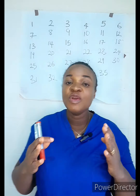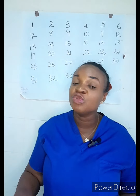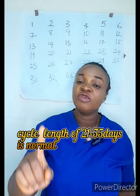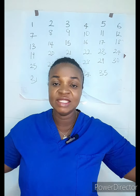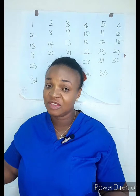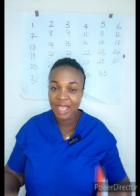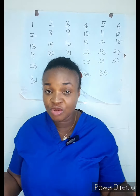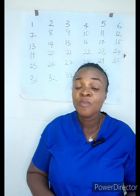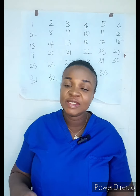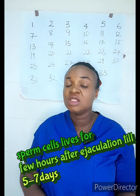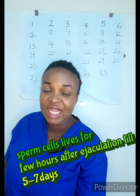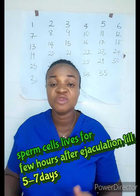For every woman, your cycle length — if said to be normal — falls between 21 to 35 days. The cycle length is calculated from the day of the beginning of your first menses to the next menses. It may not be regular; this month maybe 21, another maybe 28, another maybe 30 — it is still within normal. The sperm cell is said to live for a few hours to five to seven days after being deposited in the posterior fornix of the vagina.